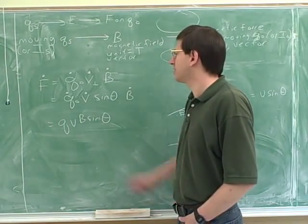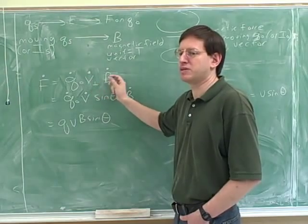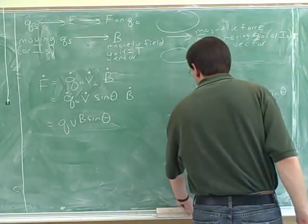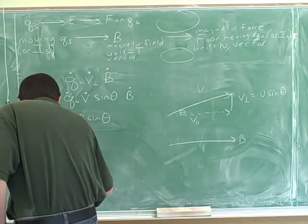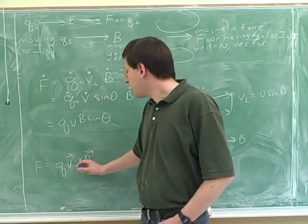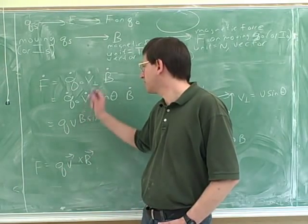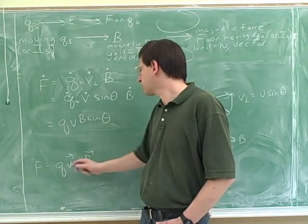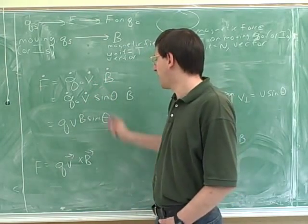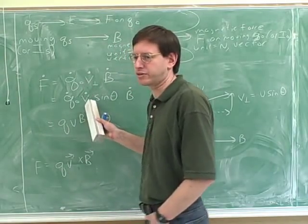For the exam, I recommend using the V-perpendicular form and using the sine-theta form as a backup, because people tend to get confused. The only purpose of the sine is to take the component of V that's perpendicular to B, which on most problems will be the entire velocity. Another way of writing this is as a cross product. A cross product multiplies the magnitudes of two vectors but isolates only the component of one vector perpendicular to the other, using the sine of the angle between them. For an introductory class, cross products are not too important — you can just use these practical formulas.